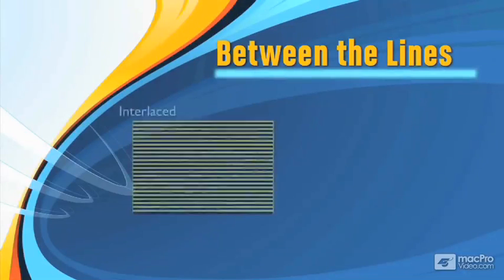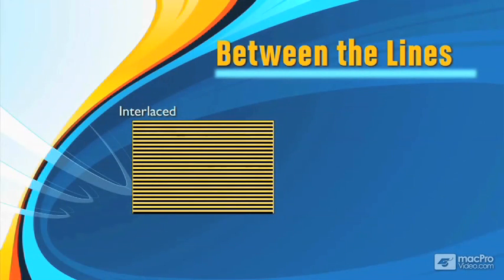If we read between the lines, an interlaced image shoots all the gold lines first and then a fraction of a second later shoots all the black lines. Then it interweaves or interlaces these two half images together to form a whole image.